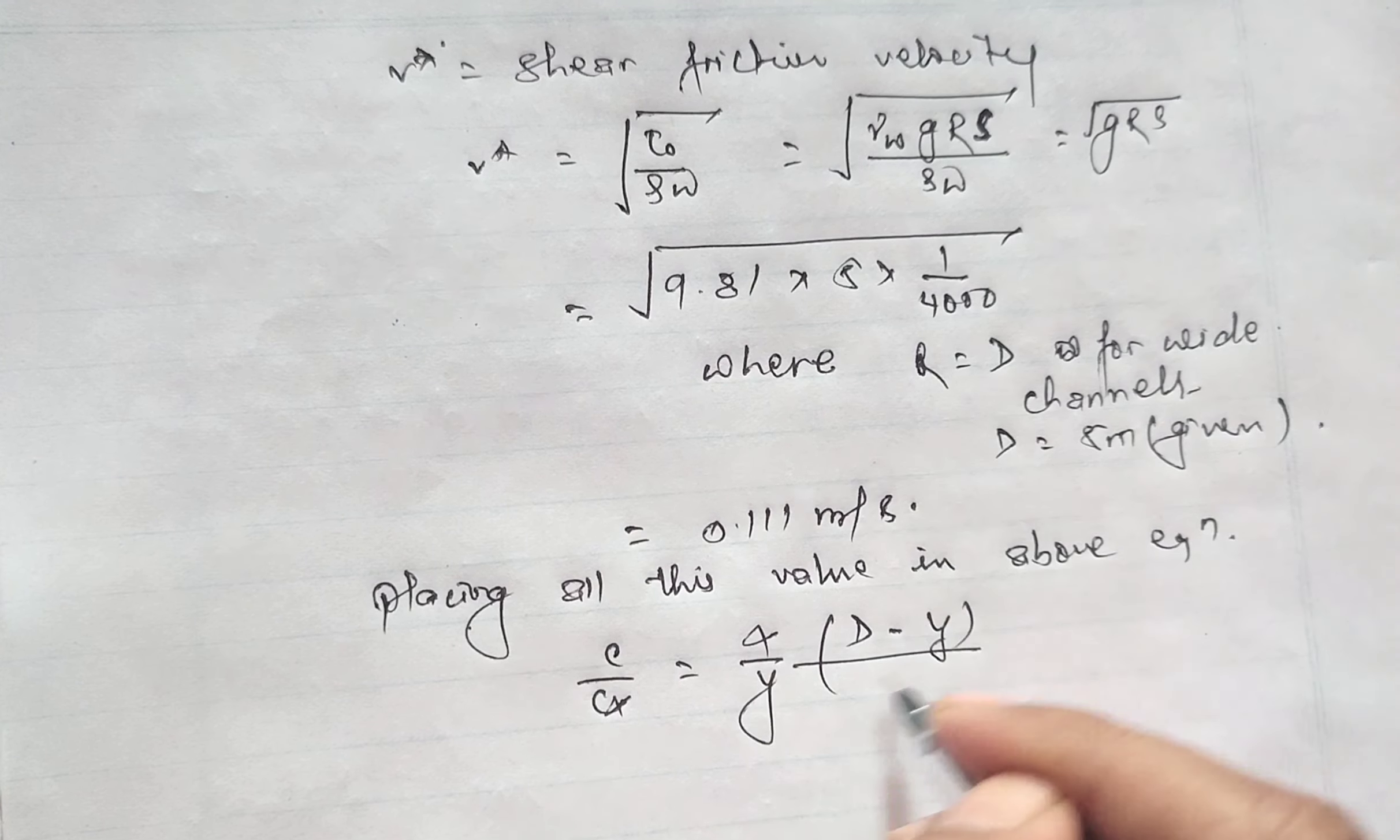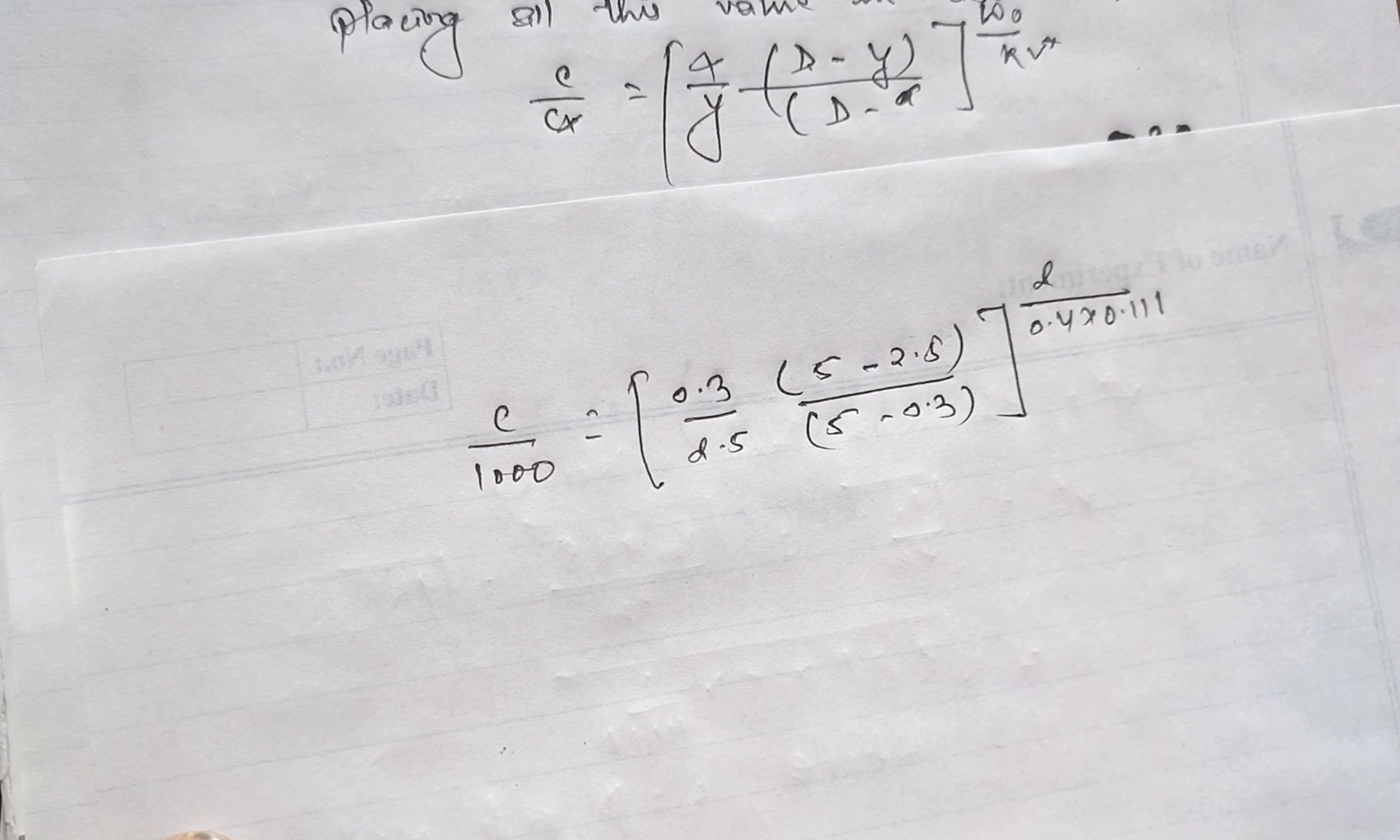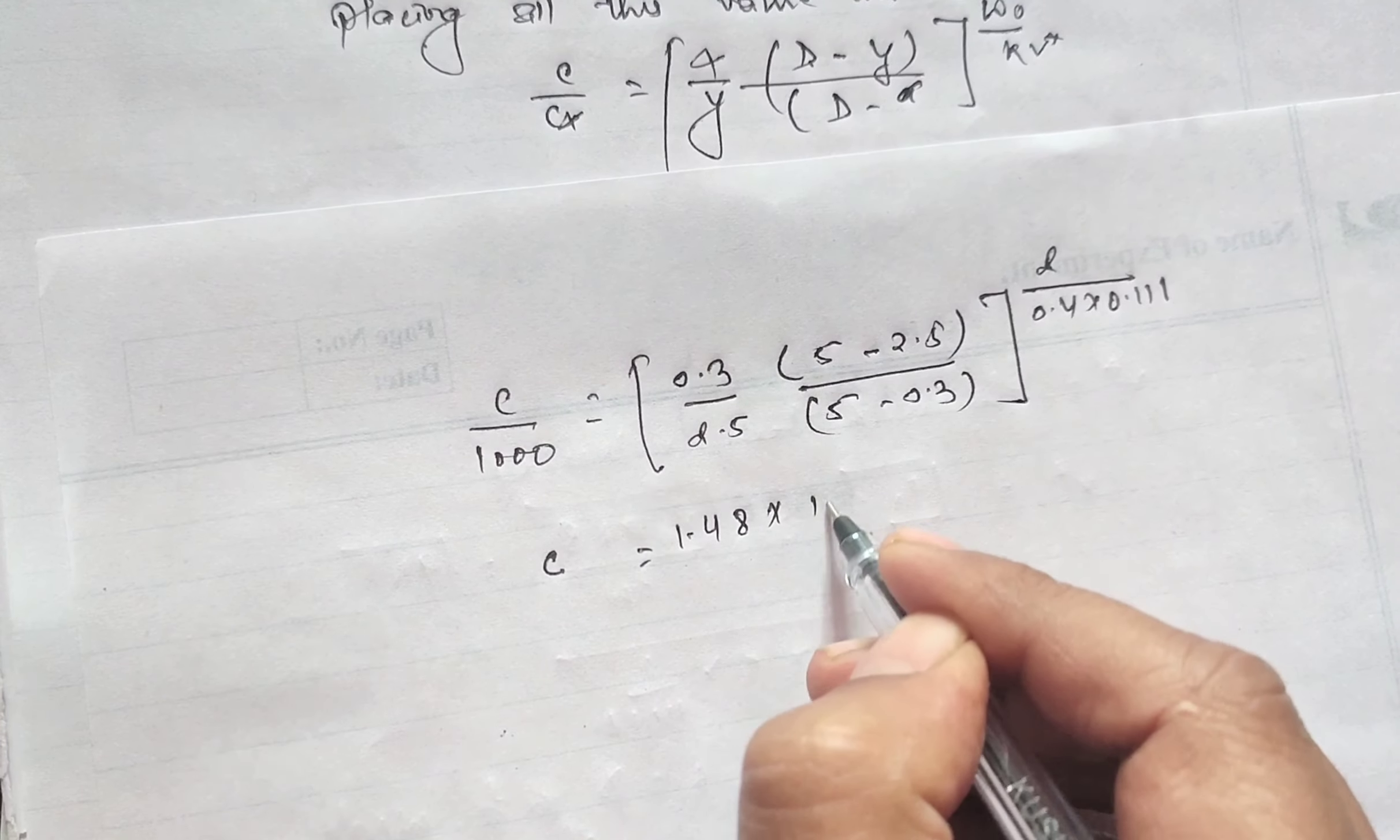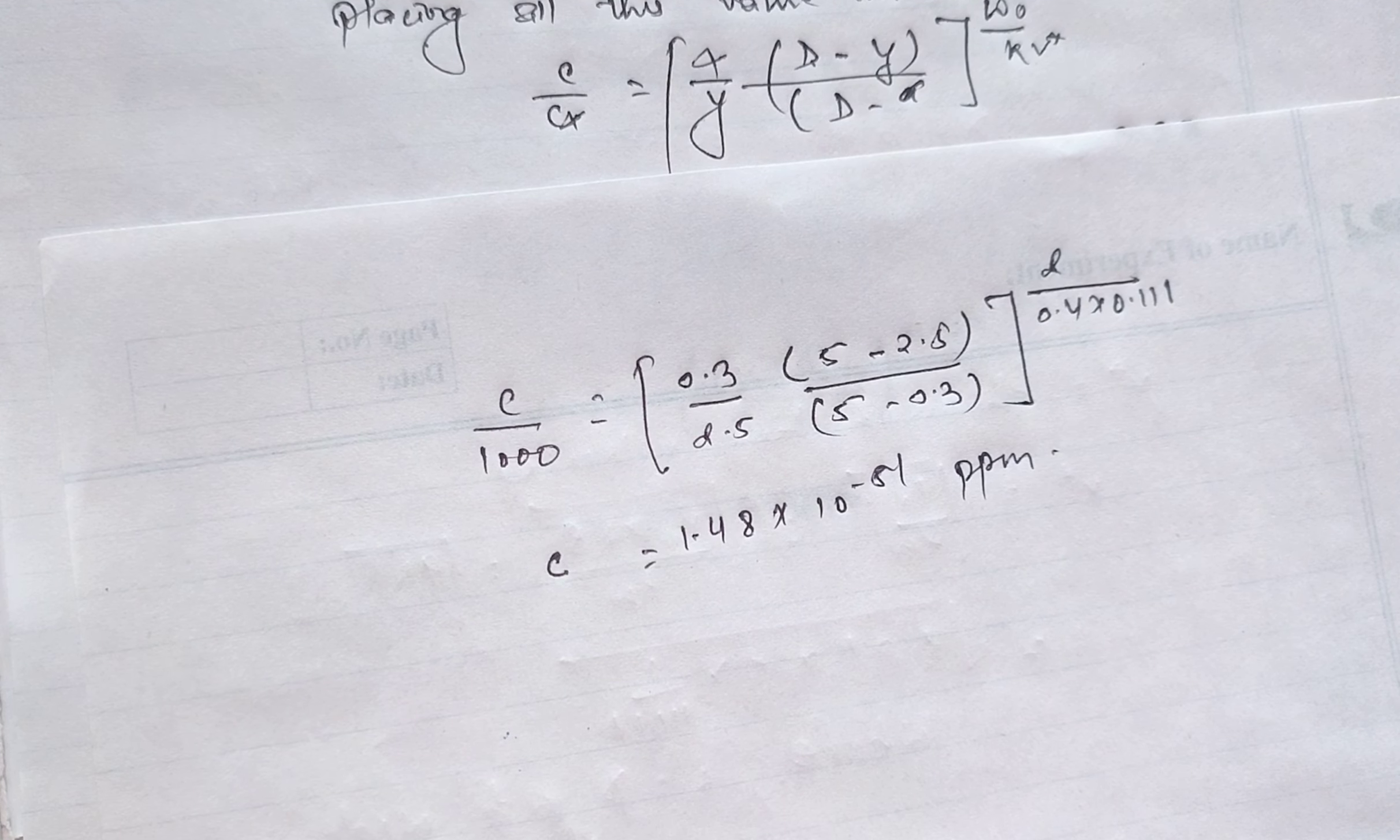So now placing the value: c/1000 equals [0.3/2.5 × (5-2.5)/(5-0.3)]^(2/(0.4×0.111)). On solving, the value of c will be 1.486 × 10^(-51) ppm.